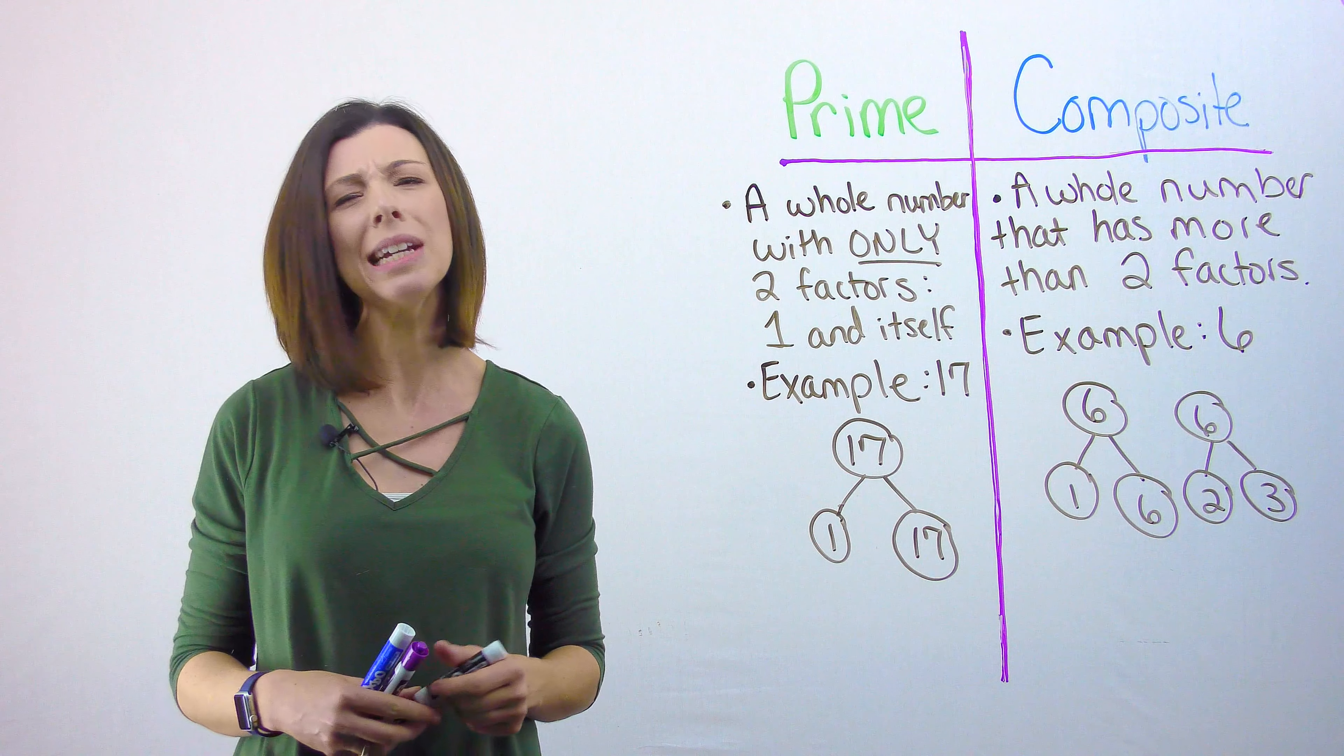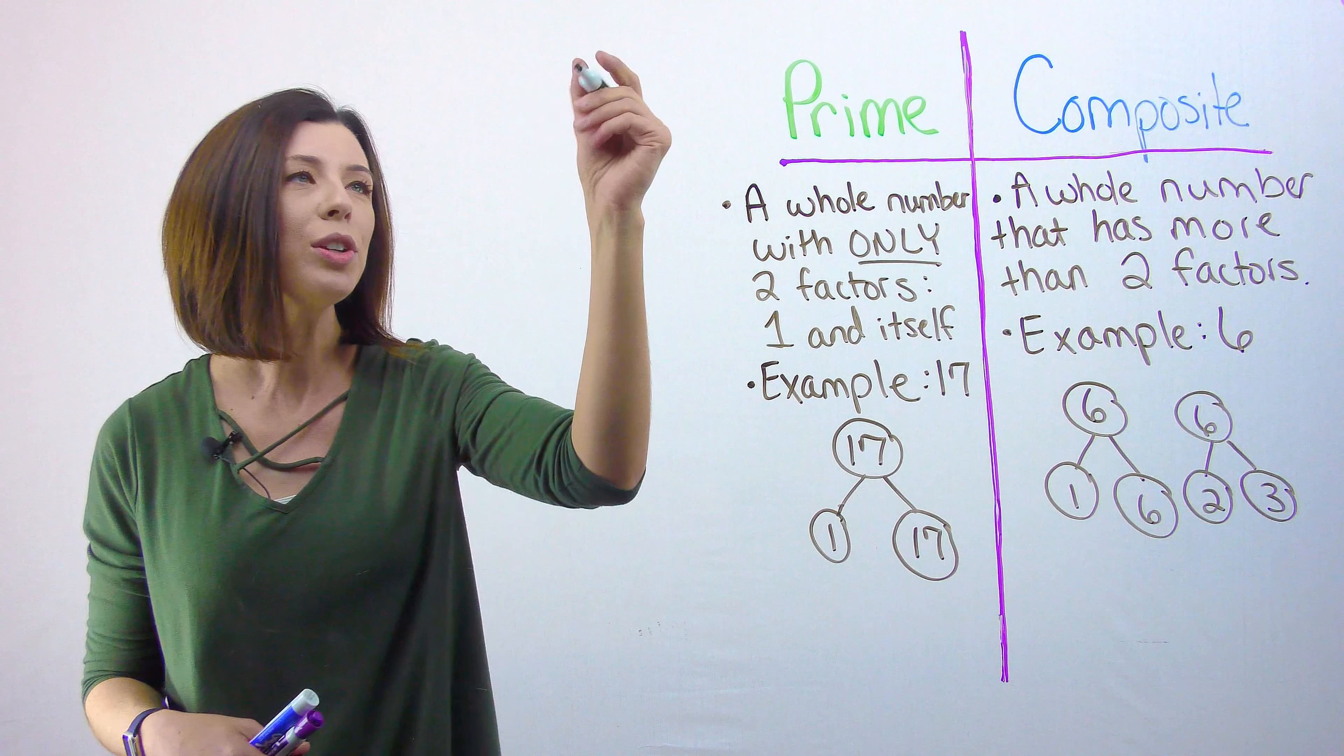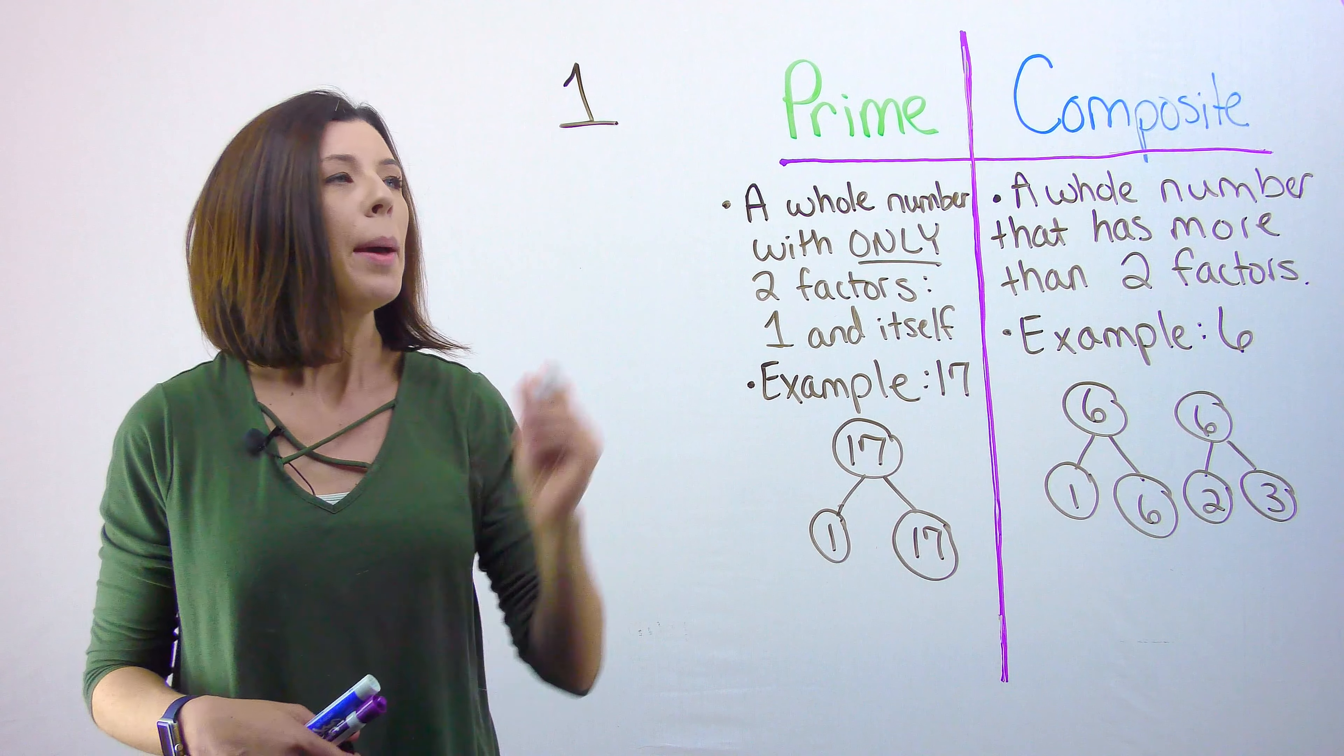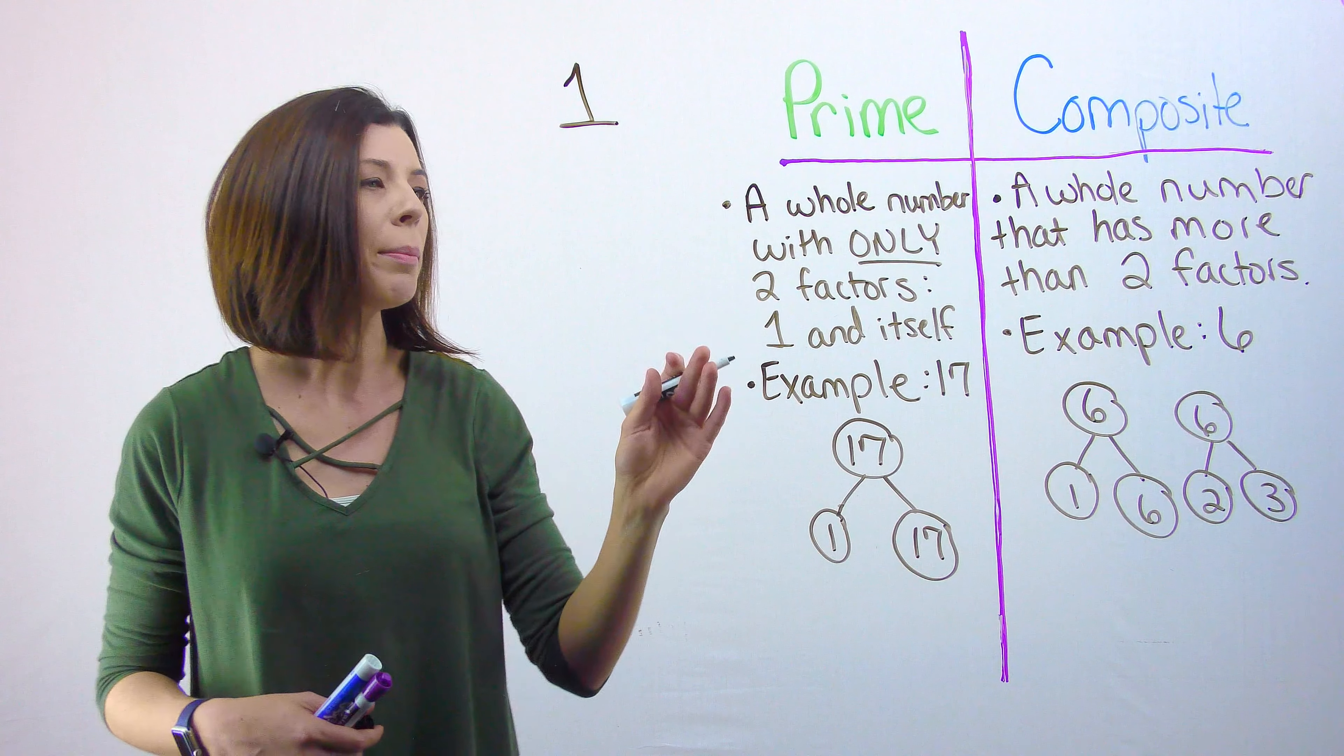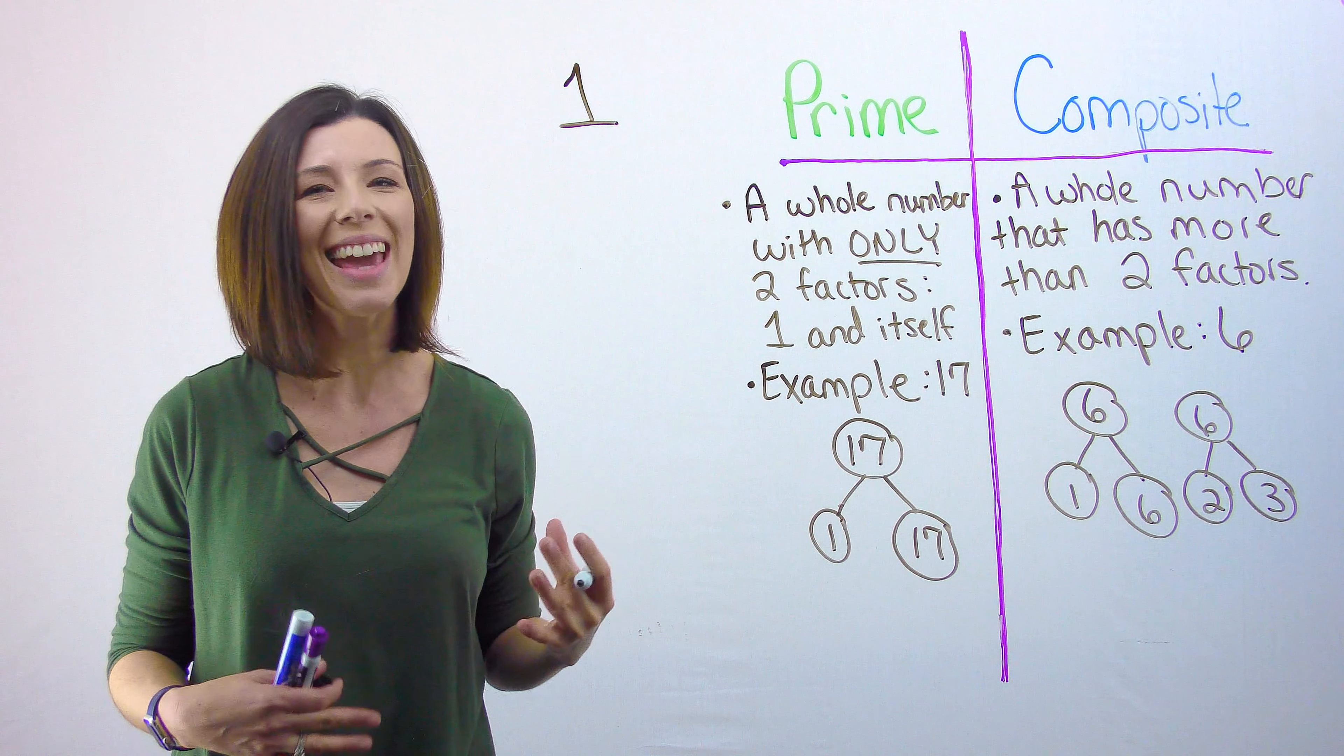So now let's talk about zero and one, because these throw us for a loop. One, you might think, well, by definition of prime, a whole number with only two factors, well, can I multiply one times one? Here's the catch.